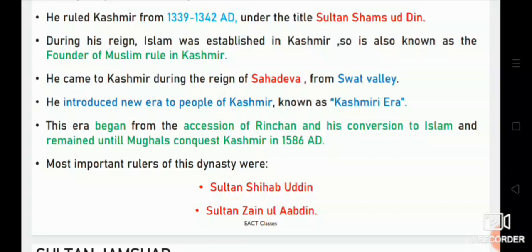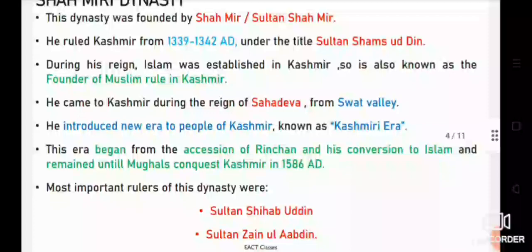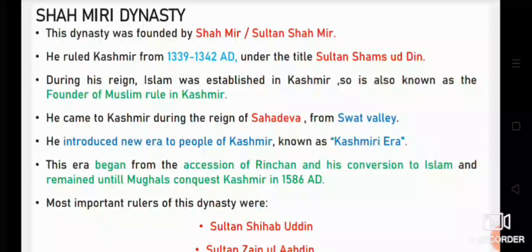The most important rulers of the Shahmiri dynasty are Sultan Shihabuddin and Sultan Zainul Abeddin. To recap: the founder of the Shahmiri dynasty was Sultan Shahmeer, who ruled from 1339 to 1342 under the title Sultan Shamsuddin.